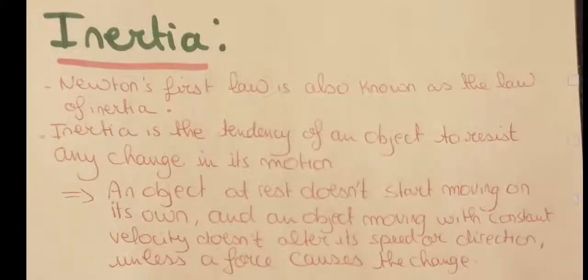Inertia. Newton's first law is also known as the law of inertia. Inertia is the tendency of an object to resist any change in its motion. For example, an object at rest doesn't start moving on its own, and an object moving with constant velocity doesn't alter its speed or direction unless a force causes the change. The object needs force in order to change its motion — it resists any change in its motion, and this is called inertia.